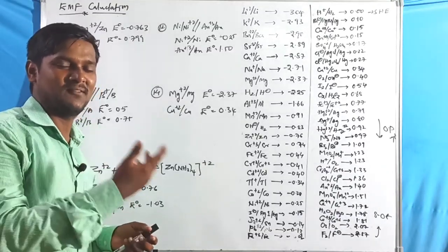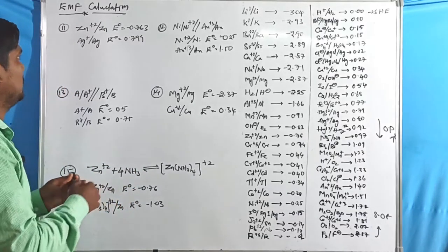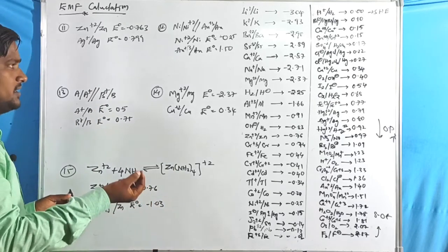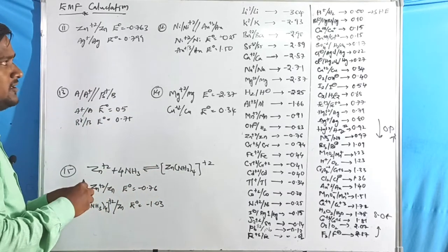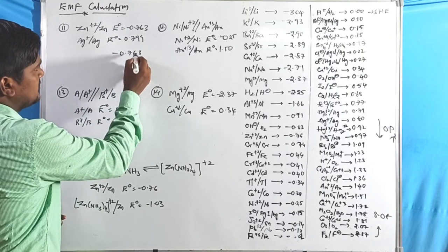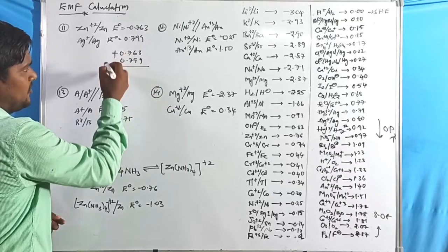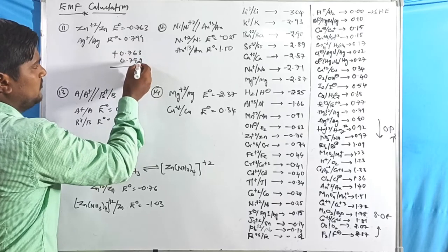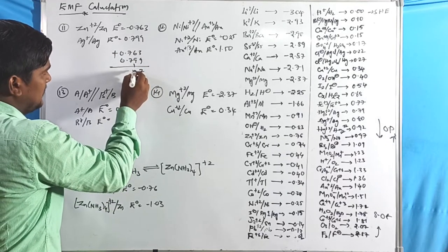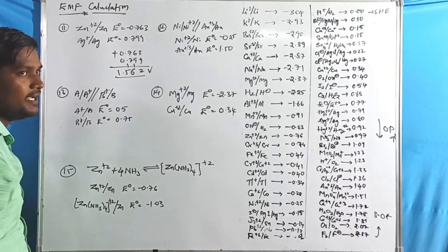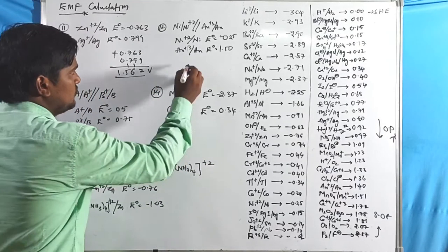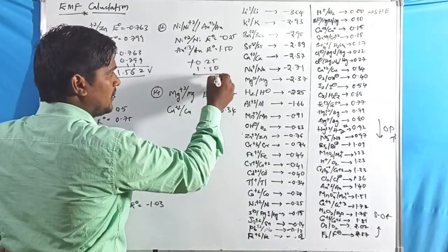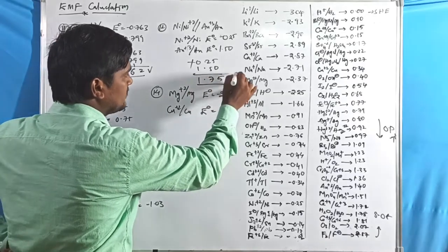Problem 11: two values given. Without a cell notation representation, using the direct method — negative one is anode (above), positive one is cathode (below). Change the anodic electrode sign and add. Result: 1.562 volts. Problem 12: values −0.25 and +1.50. Change the sign of the anode (negative value): 0.25 + 1.50 = 1.75 volts.